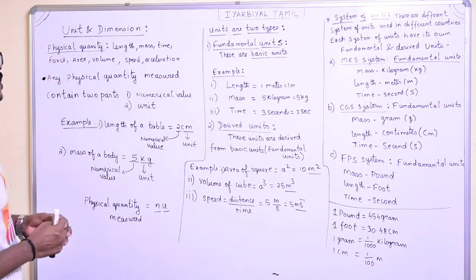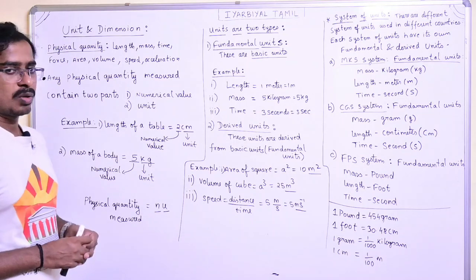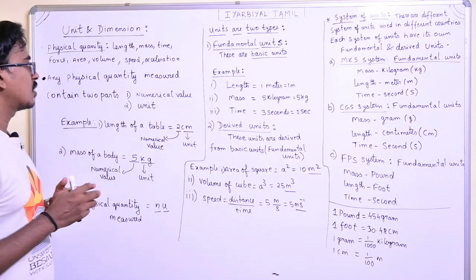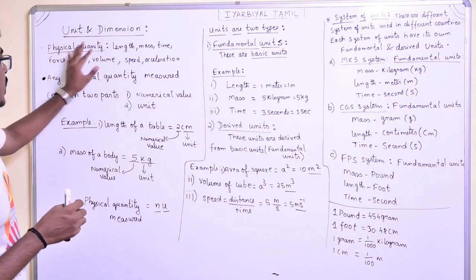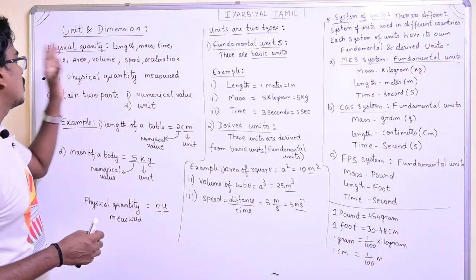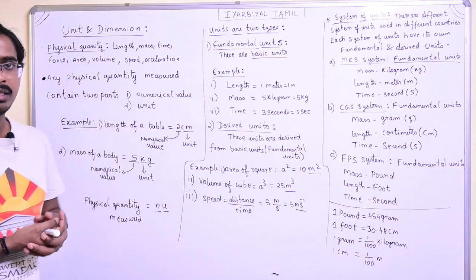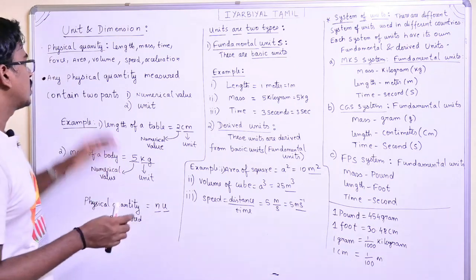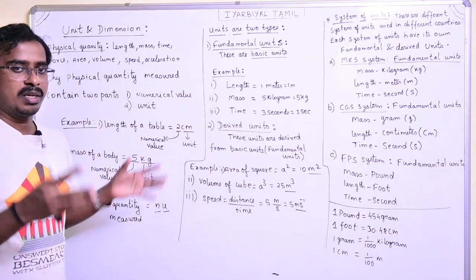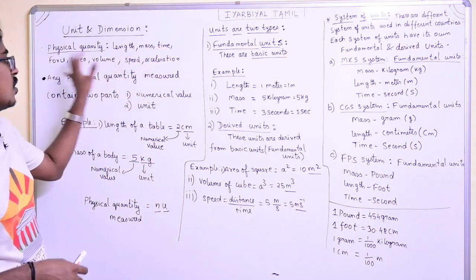Now, we are going to start Units and Dimensions, Chapter 1. Let's start with Units. First, Physical Quantity. Physical Quantity means length, mass, time, force, volume, speed, acceleration. Length is 2m, 5m, 10m — that is the physical quantity.